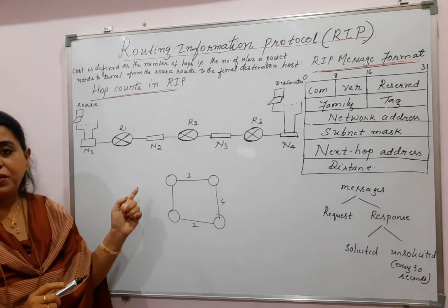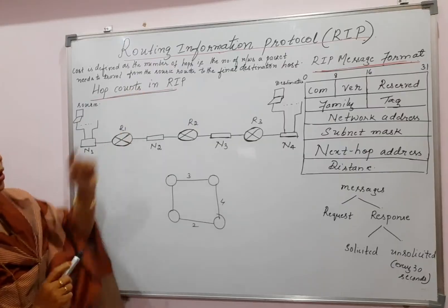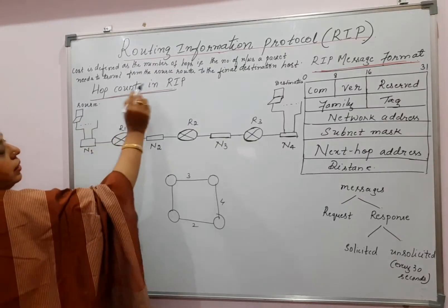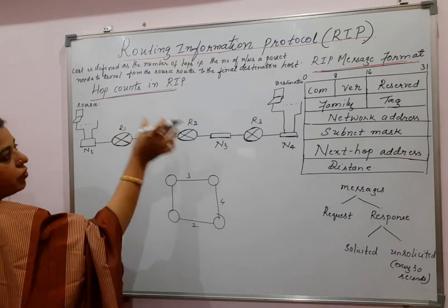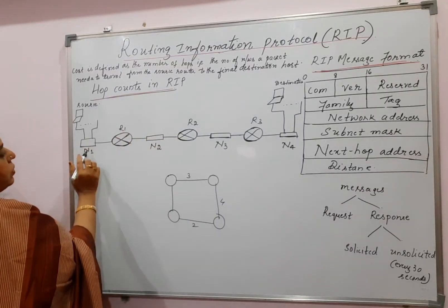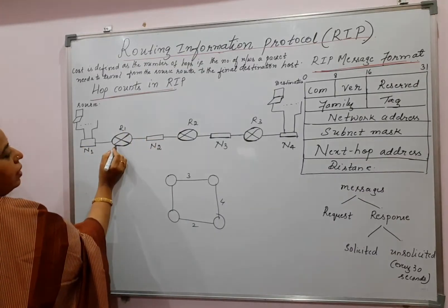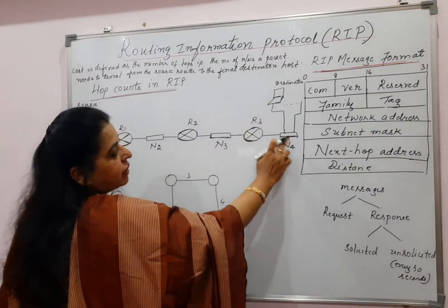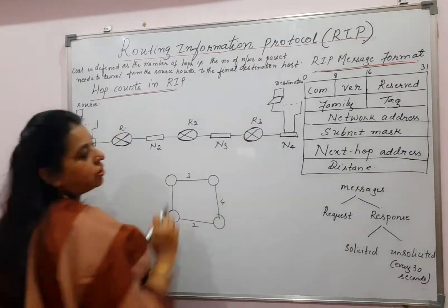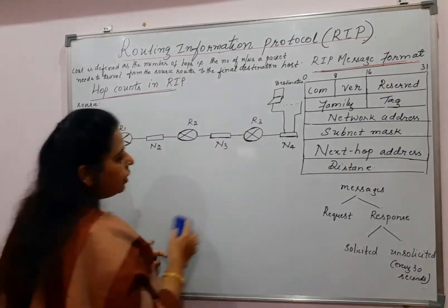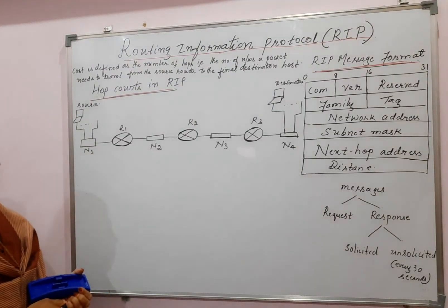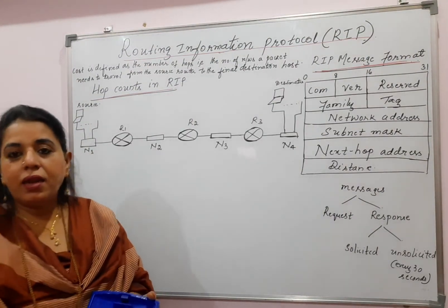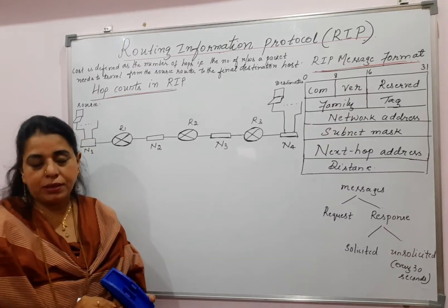Look at the definition — it is the number of hops, and that number of hops indicates the number of networks a packet has to travel from the source router to reach the final destination host. Once you know how to calculate the number of hops between the different routers, it is easy for you to construct the routing table for the different routers.